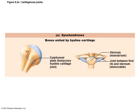Examples of synchondrosis are the epiphyseal plates in children and the joint between the costal cartilage of the first rib and the sternum. The rest of the sternocostal joints are synovial plane joints, so they don't fall into this category.